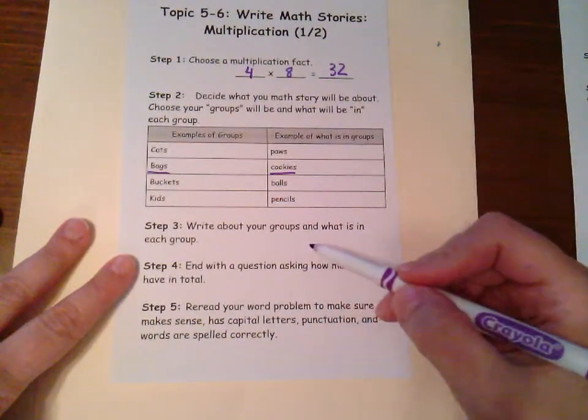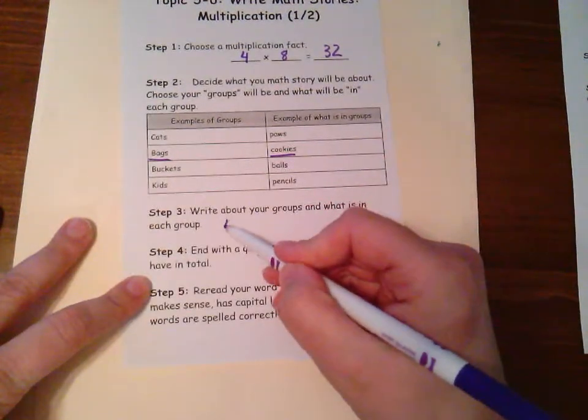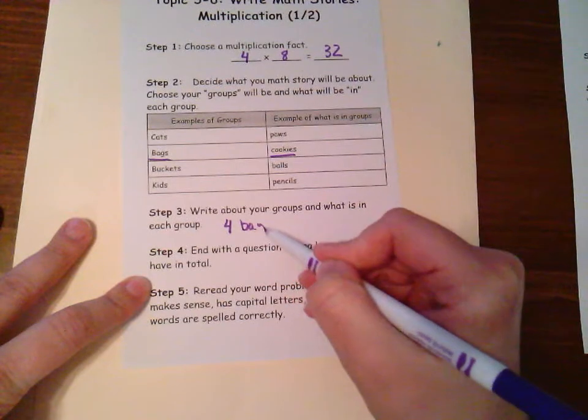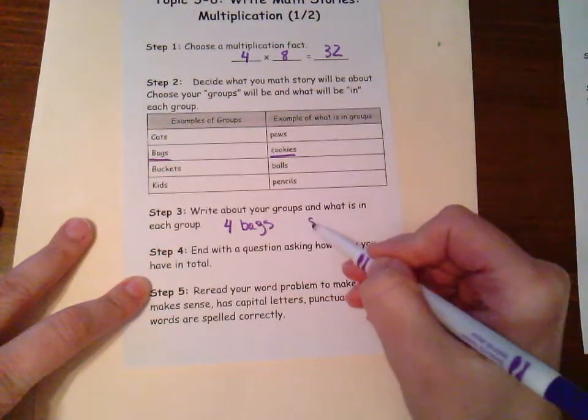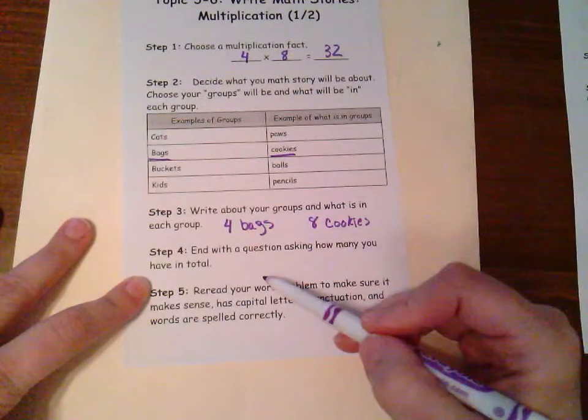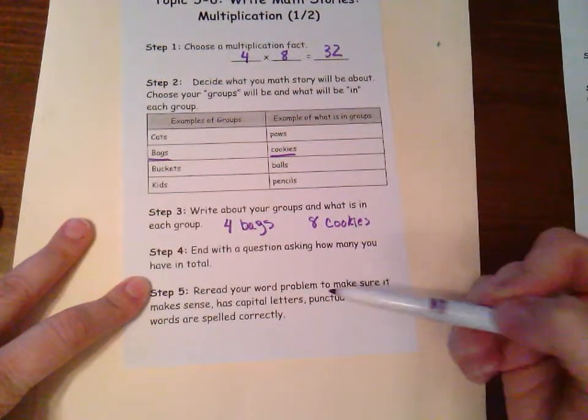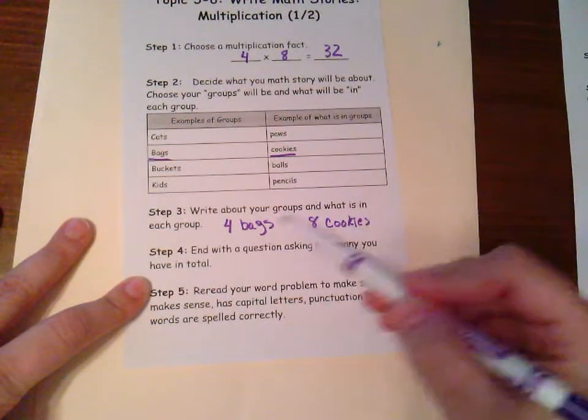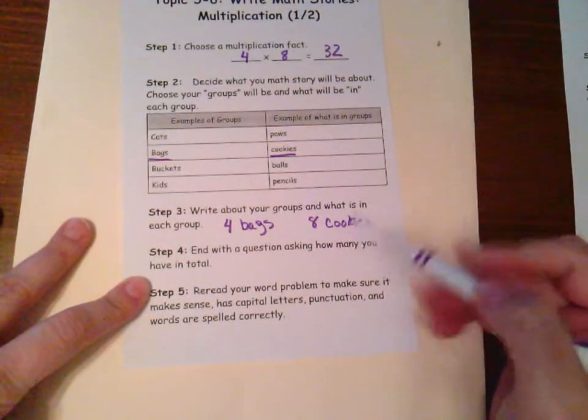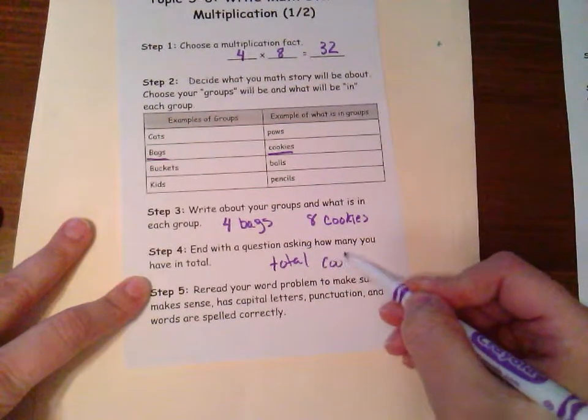So now write about your groups and what's going to be in each group. So in this case, I'm going to have four bags, and I'm going to have eight cookies in each bag. And I want to make sure that I always end with a question asking how many I have in total. So in this case, if I'm talking about bags of cookies, I know that in the end, I'm going to want a total amount of cookies.